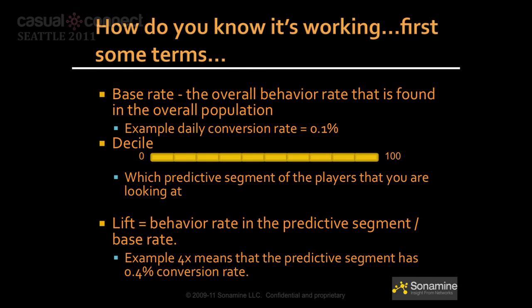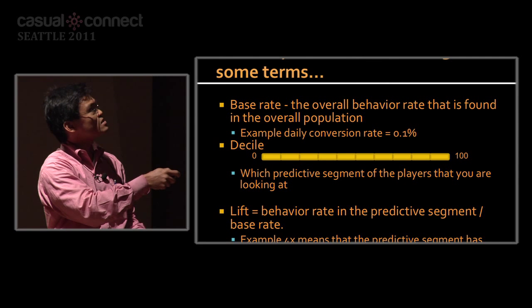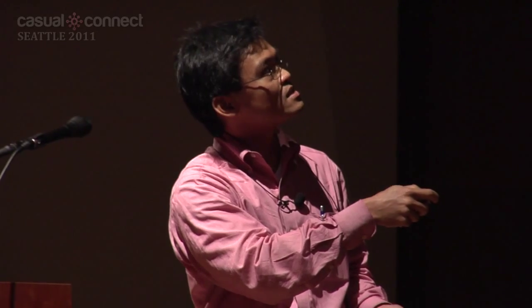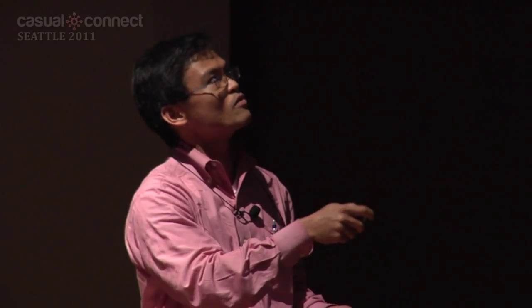Some more terms. Base rate is the overall rate that a particular behavior — say, conversion — is happening in the population. Decile: if you split the population into different slices, a decile is which segment you're looking at — first decile, second decile, and so forth. Lift is a way to measure how good your predictive is. Lift is defined as the density of the behavior in a given decile divided by the overall base rate.